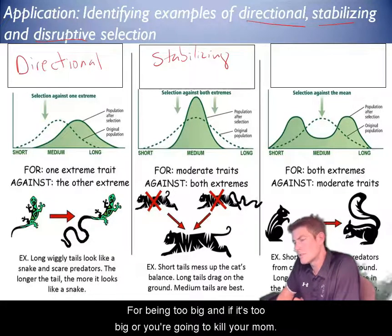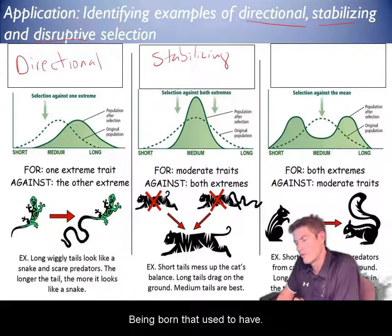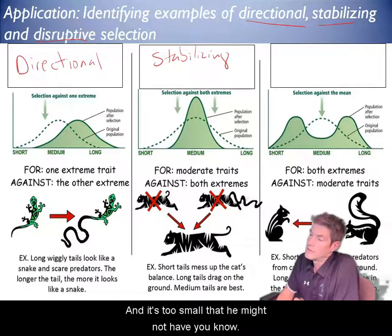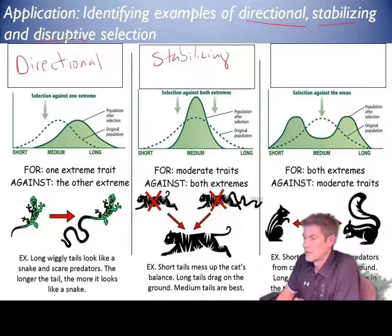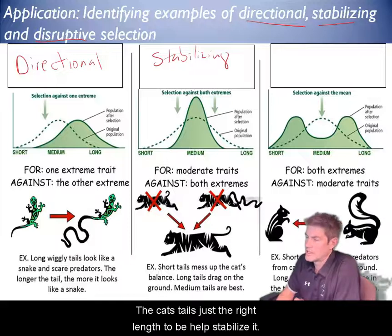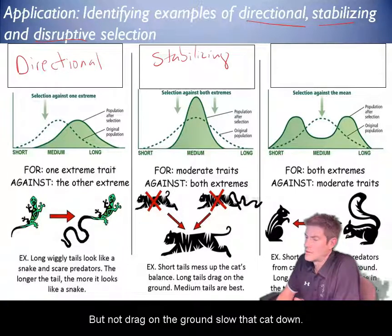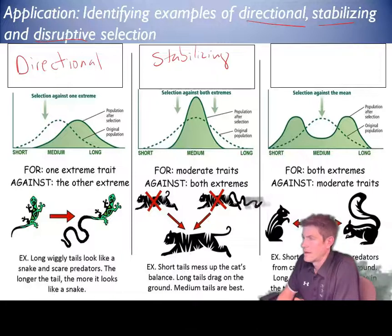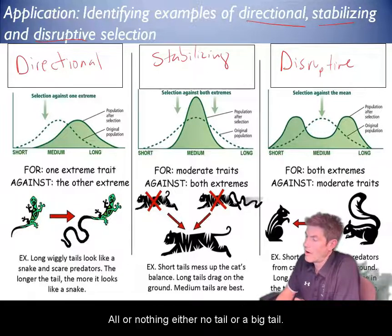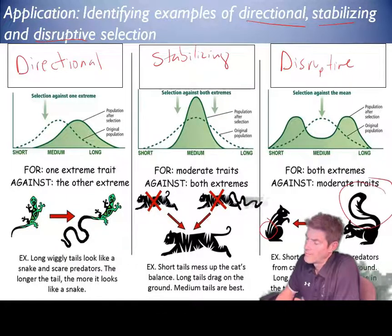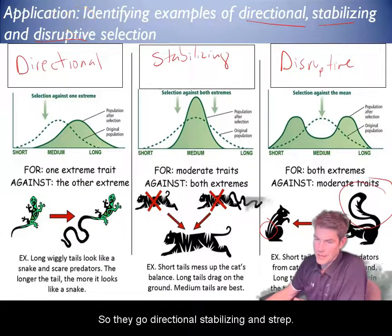Too big a head and you're going to cause problems during birth, and too small means you might not have as good a chance at reproducing. A cat's tail is just the right length to stabilize it — not so long it drags on the ground and slows the cat down. Disruptive selection is the last type, less common — you're making either all or nothing: either no tail or a big tail, not much in between. There you go: directional, stabilizing, and disruptive.